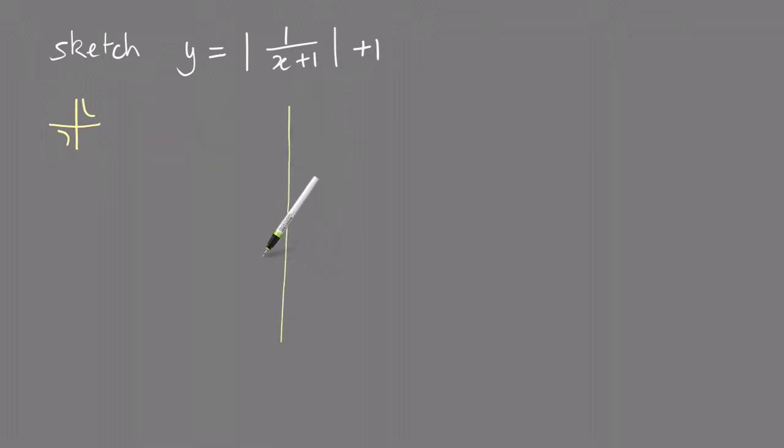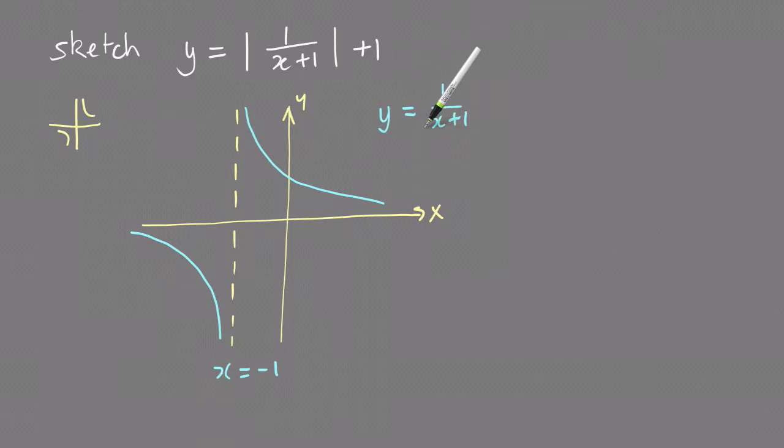So this is the graph of y equals 1 over x plus 1. It's this basic hyperbola 1 over x moved that way 1, and so the vertical asymptote is x equals minus 1.